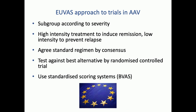In EUVAS, we decided we would subgroup patients according to severity, give high-intensity treatment to induce remission, and then low-intensity for maintenance. We agreed a standard regimen by consensus and tested it against the best alternatives through RCTs. That sounds awfully easy, but if you sit in a room full of people from France, Germany, the Netherlands trying to reach consensus — like Theresa May and many others — you find it's not possible. I was lucky to be chair of the clinical trials group when it was set up. As an English speaker, I had a bit of an advantage summarising their thoughts on the blackboard — writing what I wanted to write, which didn't bear much relation to what they said. That's how trials are developed.